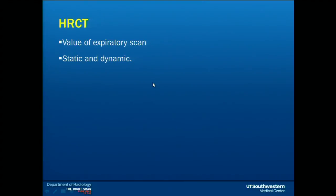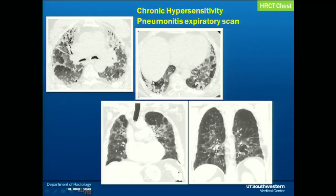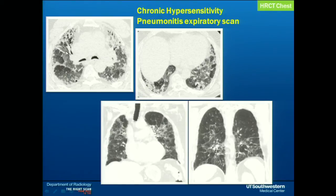We also do expiratory scans — static and dynamic. This particular patient had a parakeet for 15 years and developed chronic dyspnea and cough for the past six months. The chest CT scan was very remarkable. You can see this is the expiratory scan: there is posterior bowing of the trachea showing very low attenuation areas, which are areas of air trapping. In addition, you can see upper lobe fibrotic changes. This constellation of findings was highly suggestive of chronic hypersensitivity pneumonitis in a patient with positive exposure. This scan helped in making the diagnosis without the use of biopsy.